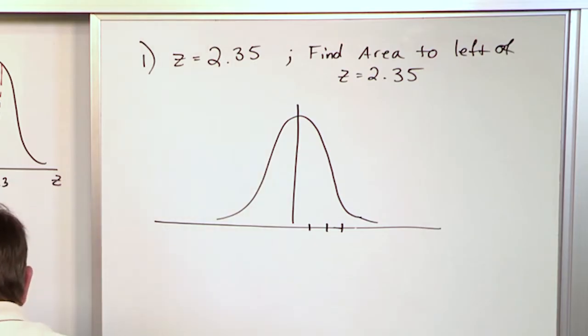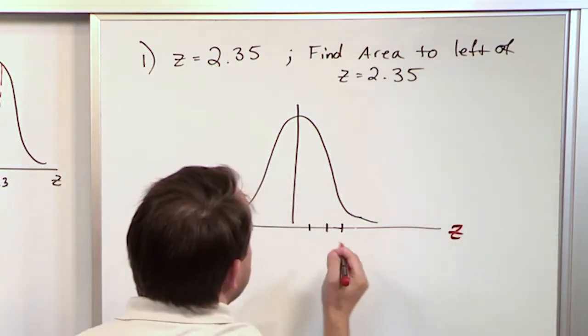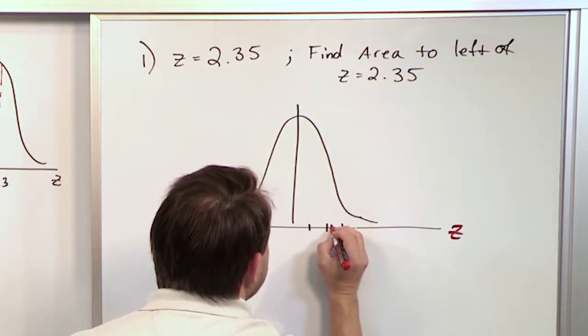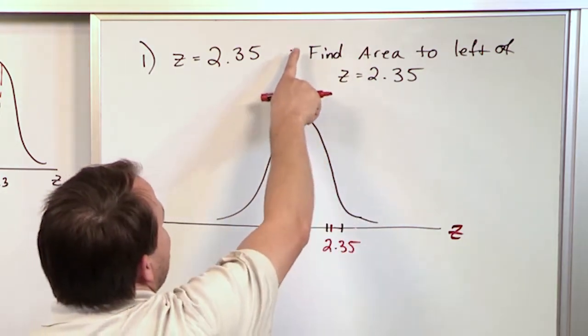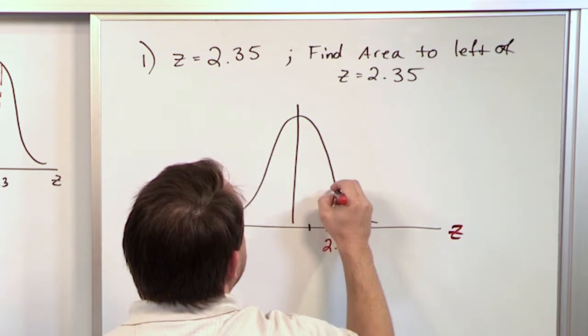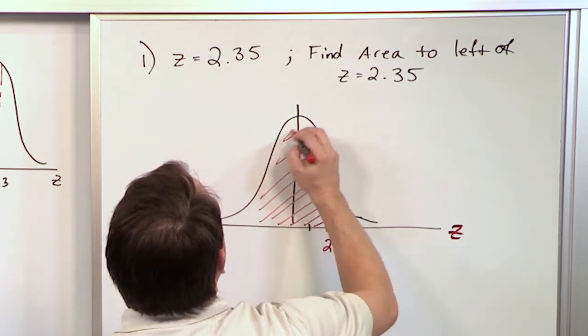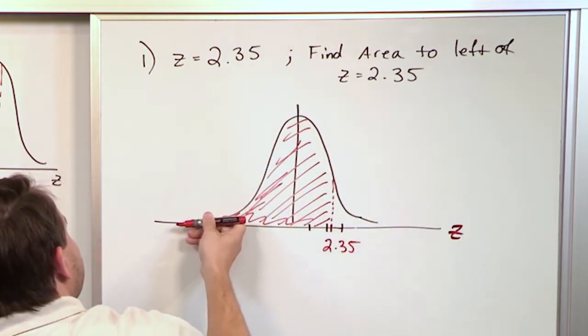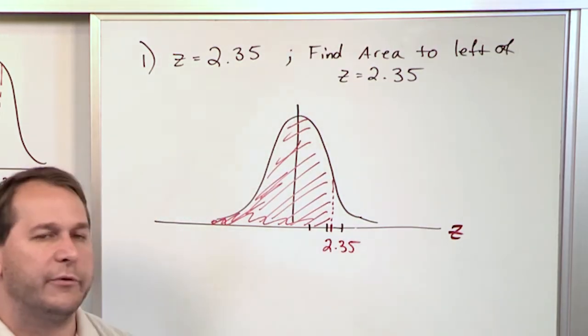Let me change colors here. If this is z is equal to 1, so this is values of z. If this is z is equal to 1, z is equal to 2, z is equal to 3, so right around here is 2.35. So we're asked, find the area to the left of this underneath the normal distribution. So when we use our z chart table, we're going to be calculating the area all the way to the left under the curve, all the way to negative infinity in this tail way down here, but only from the value of 2.35. So how do we use our table?